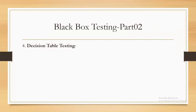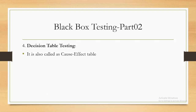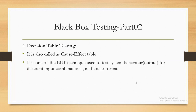The first one is decision table testing, also called a cause-effect table. 'Cause-effect' means: based on different inputs (causes), how the application behaves (effects). So based on given inputs, how the application behaves — that is represented in tabular format. That is called decision table testing or cause-effect table. It is one of the blackboard testing techniques used to test system behavior.